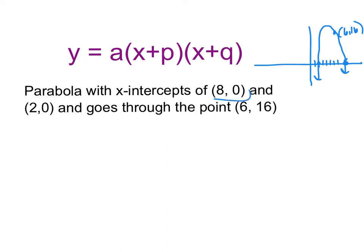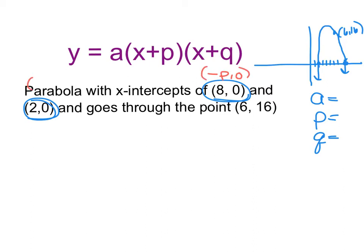We're going to start by using our x-intercepts to help us find values for a, p, and q. One x-intercept is the opposite of p comma zero and the other is the opposite of q comma zero. So my p-value must be negative eight and my q-value must be negative two, because it's the opposite of my two intercepts. I can now write my equation with what I know so far: y equals a times x minus eight times x minus two.